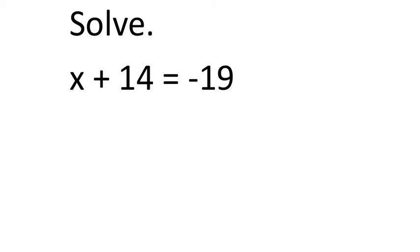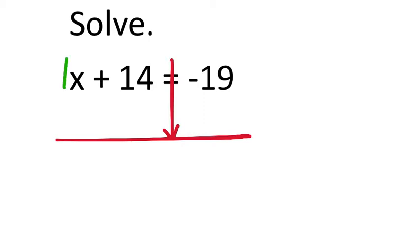Let's take this and apply Principles of Equality. The nice thing about this problem is that the coefficient of x is already a 1, so when we drop it, it's already a 1x. It's the plus 14 that I do not want there, so I'm going to have to zero that out because it's being added to the 1x. With the addition or subtraction principles of equality, we have to make zeros.